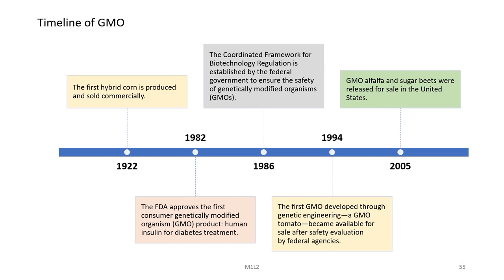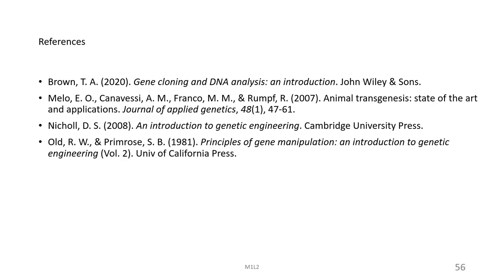This is briefly a timeline of the development of GMOs. Starting in 1922 when the first hybrid corn was produced and sold commercially; in 1982 the FDA approved the first genetically modified organism for consumers — human insulin for diabetes treatment; in 1986 the coordinated framework for biotechnology regulation was established by the federal government to ensure the safety of GMOs; in 1994 the first GMO tomato was developed through genetic engineering and became available for sale after safety evaluation by federal agencies; and in 2005 GMO alfalfa and sugar beets were released for sale in the United States.